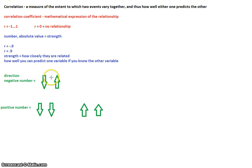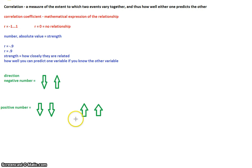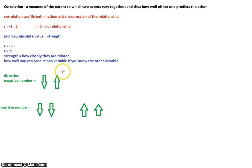What can trip people up with this is the idea of negative versus positive — these are not value judgments. This is not a good thing or a bad thing. All it means is what direction they go in. For example, age and cancer are positively correlated — the older you are, the higher your cancer rate. That is not a good thing, but it's a positive correlation. So make sure you remember: positive does not mean good thing, negative does not mean bad thing. It only refers to what direction you're going in.